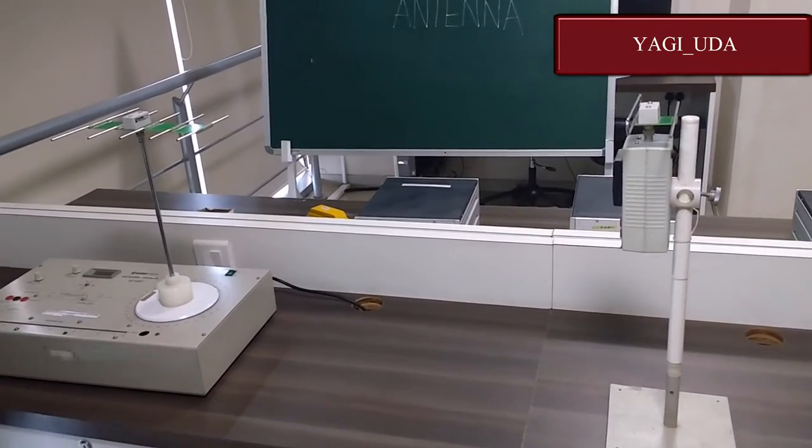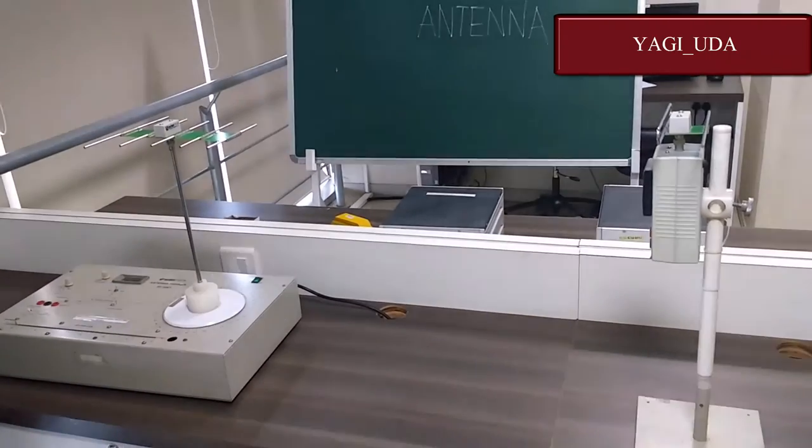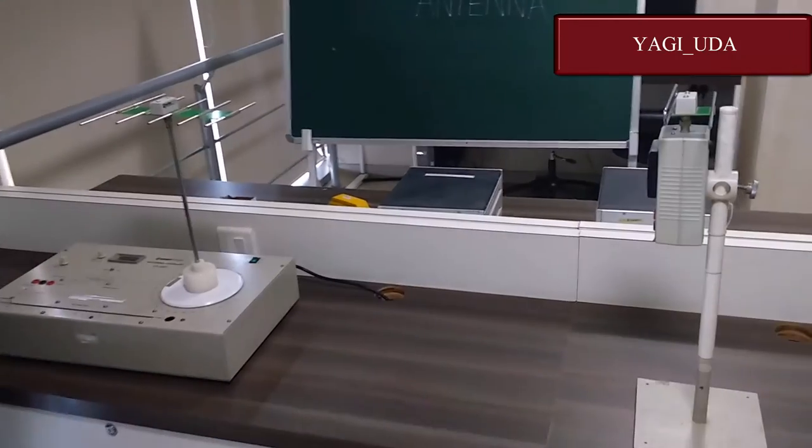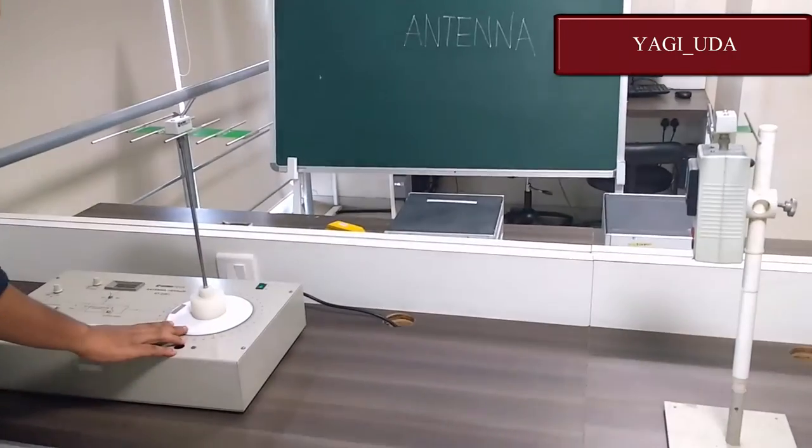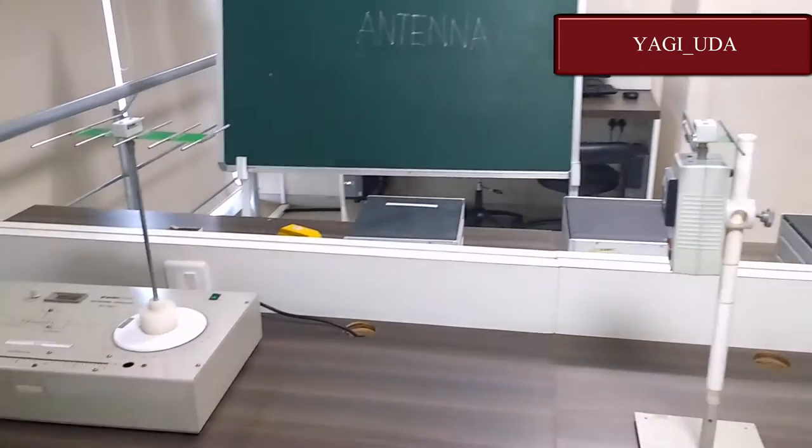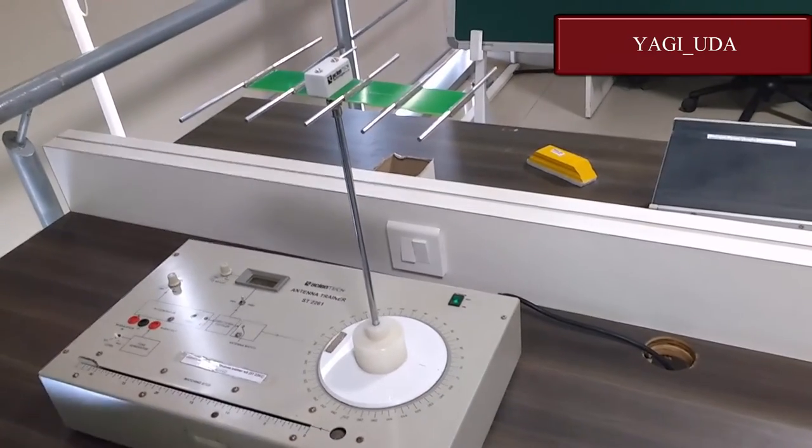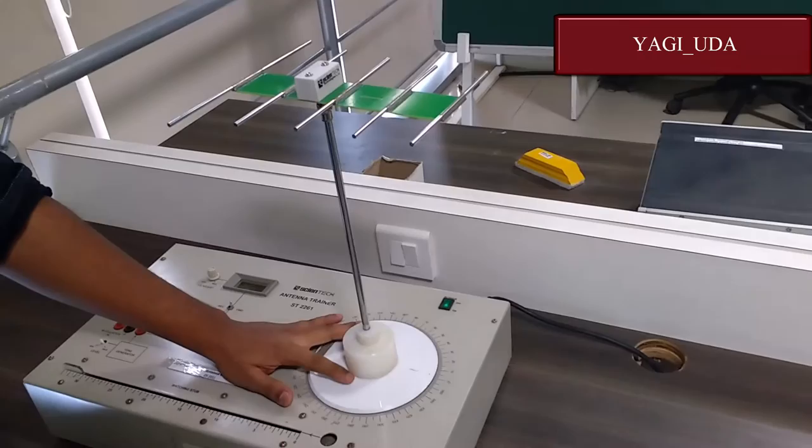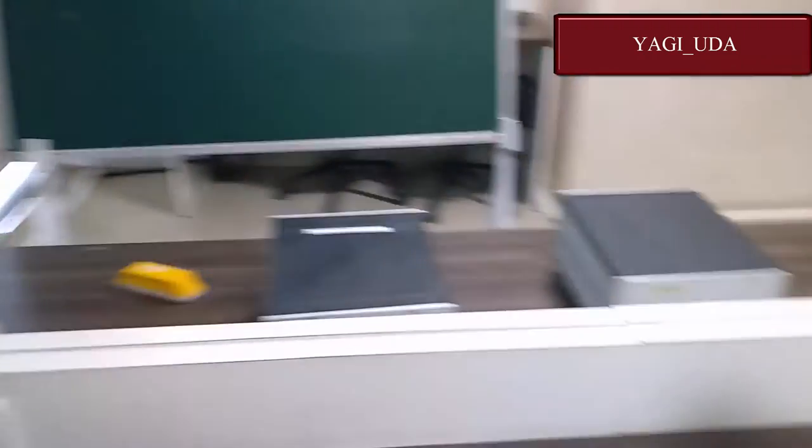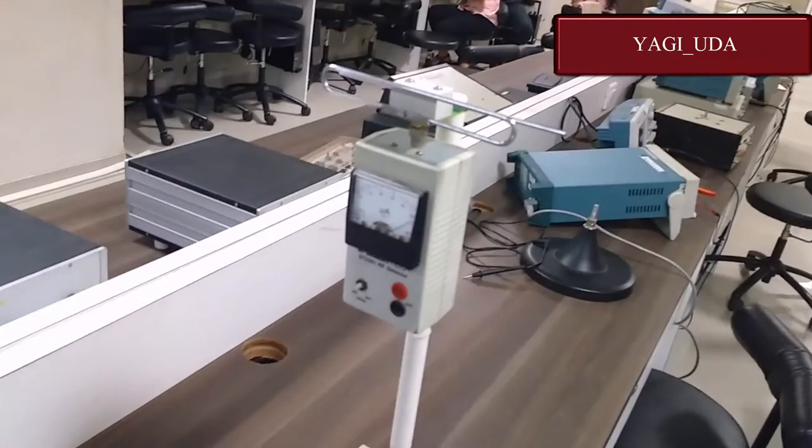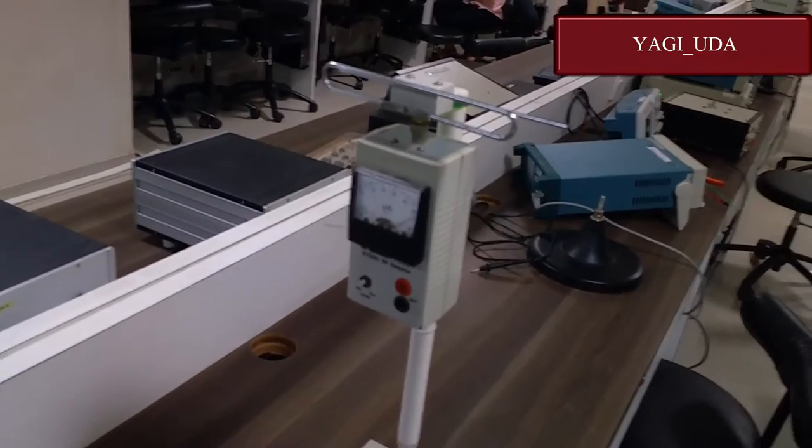Similar to a dipole antenna, the receiver is placed so it gets the maximum deflection. The transmitting antenna is set at zero, and the receiving antenna, which is shown by the milliammeter, is set at the maximum value, which is beyond 50.